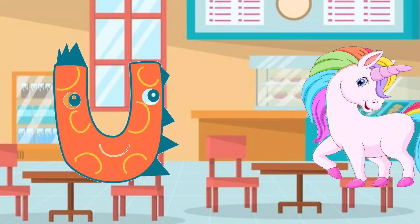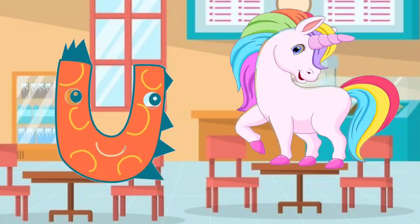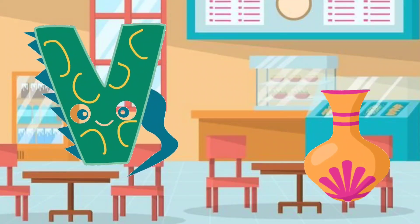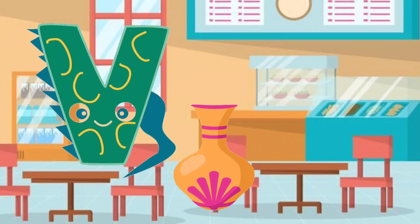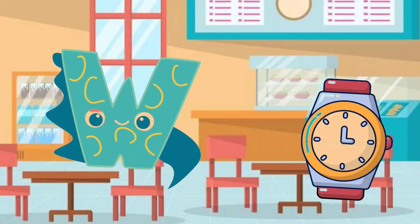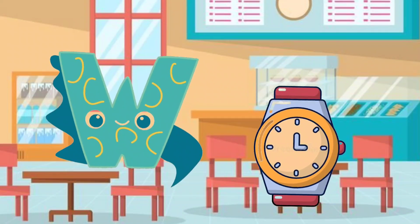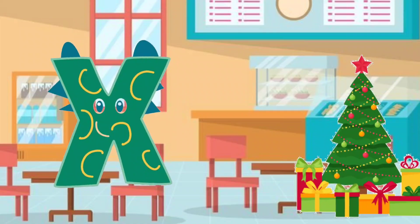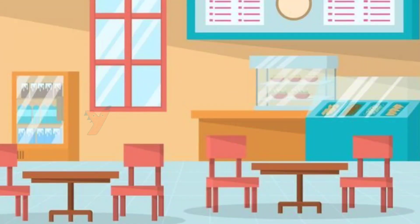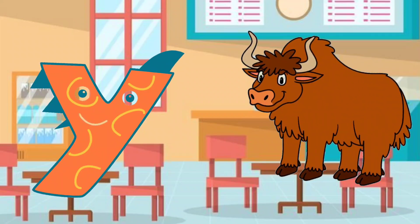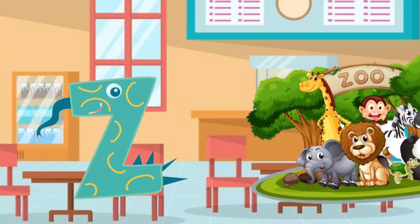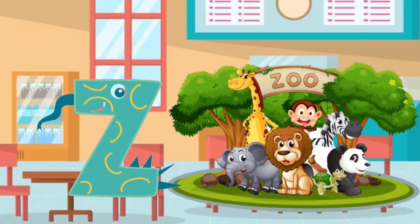U. U for unicorn. V. V for violin. W. W for watch. X. X for x-ray. Y. Y for yak. Z. Z for zoo. Bye-bye.